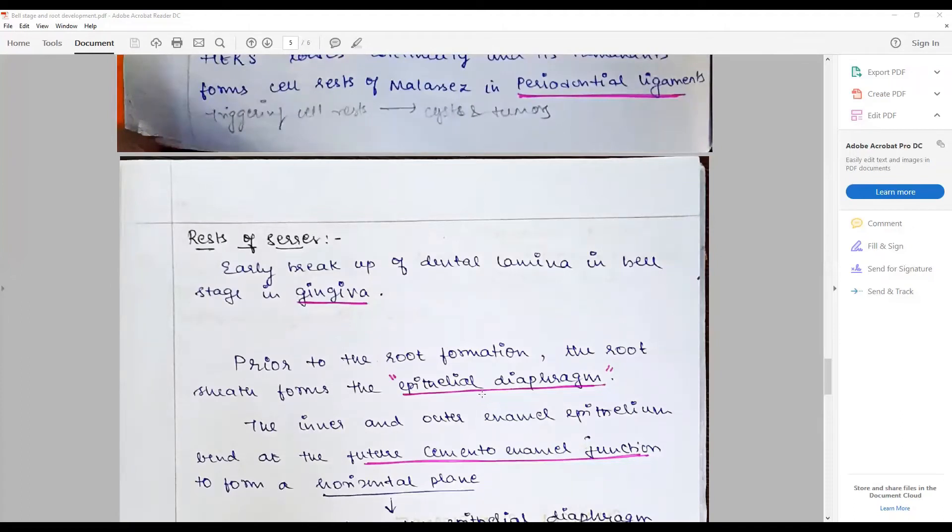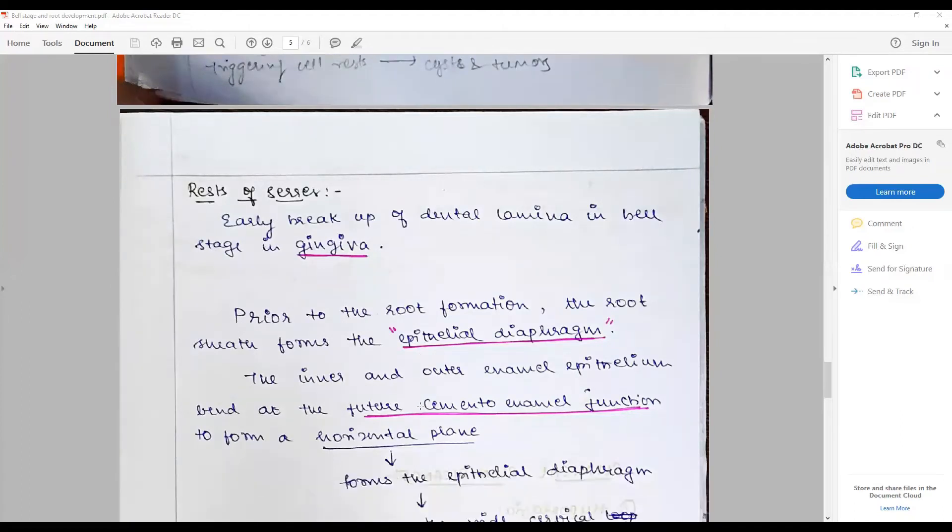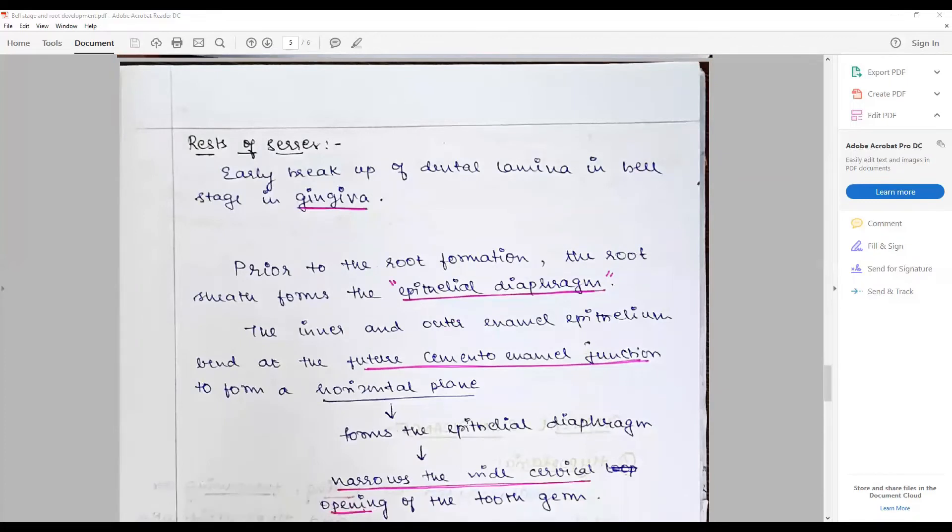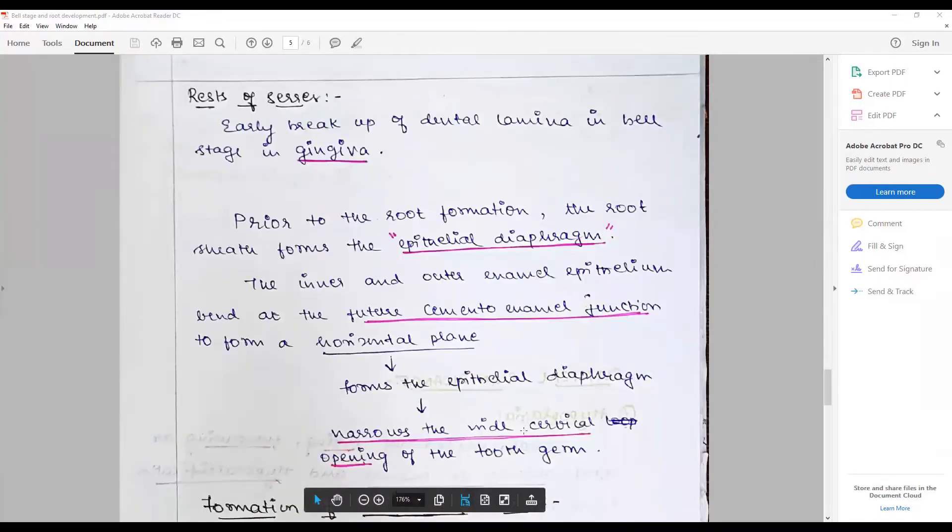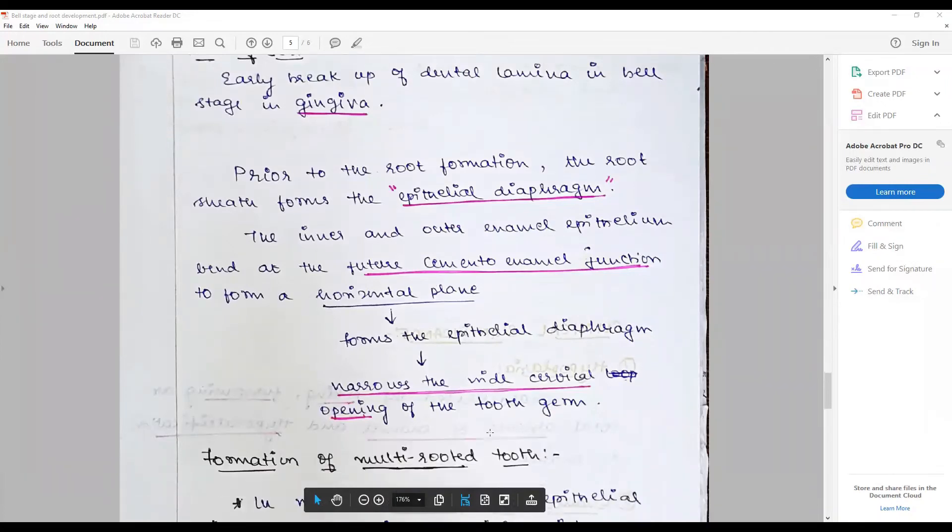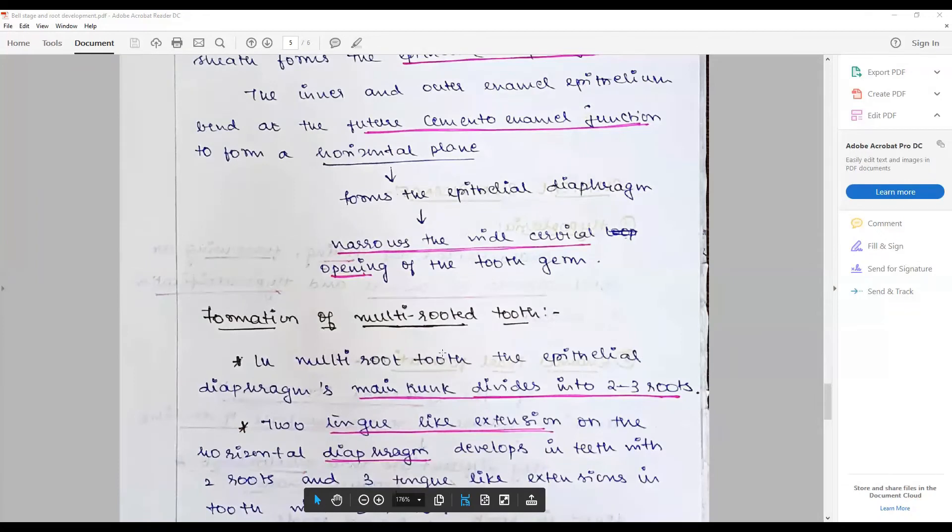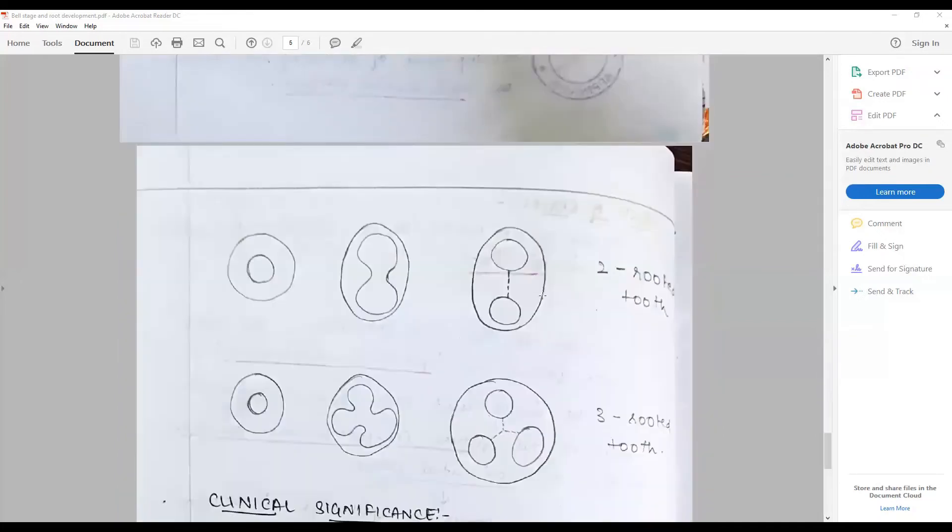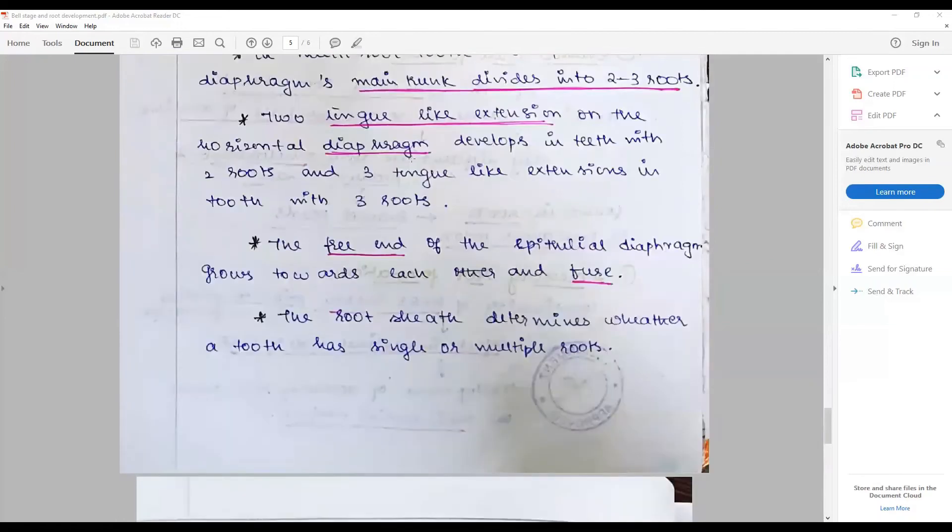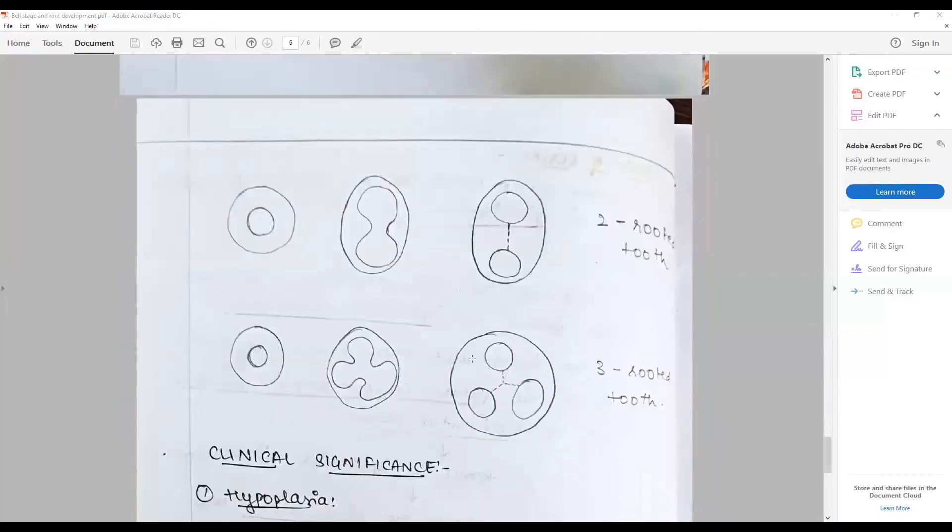Prior to root formation, the root sheath forms the epithelial diaphragm. HERS forms the horizontal plane - forms the epithelial diaphragm that narrows at the widest along the cervical margins, constricts and forms the tooth root. The diagram that has to be drawn is this: the tongue-like extension of the horizontal diaphragm develops into the tooth with two roots, or three tongue-like extensions dividing the entire structure into three roots. The free end of the epithelial diaphragm grows towards each other and fuse, and the root sheath determines whether a tooth has a single or multiple root. All these points have to be there.